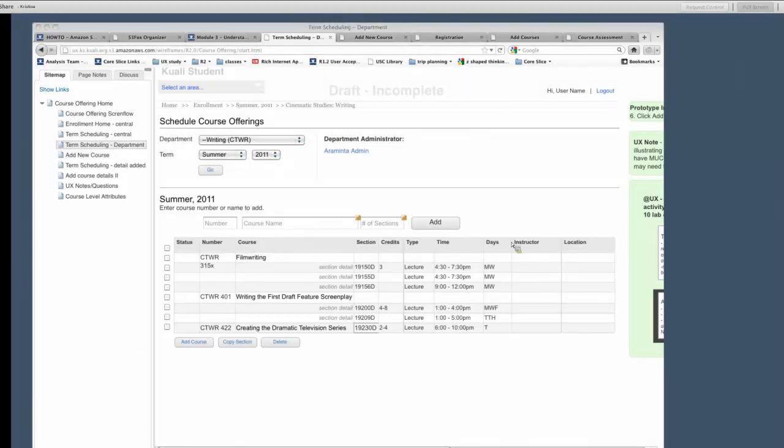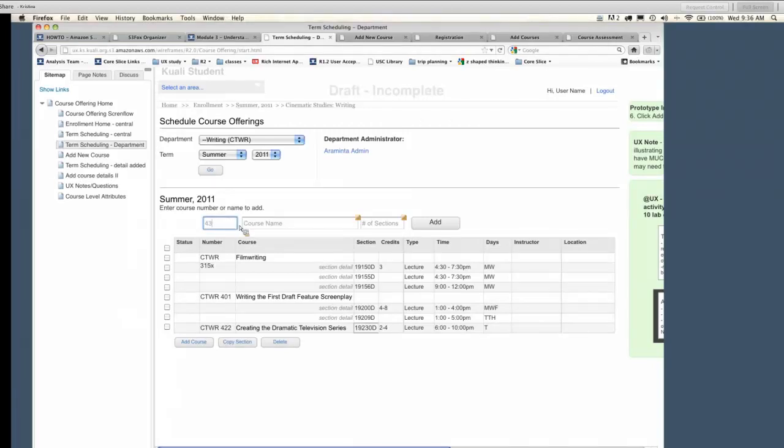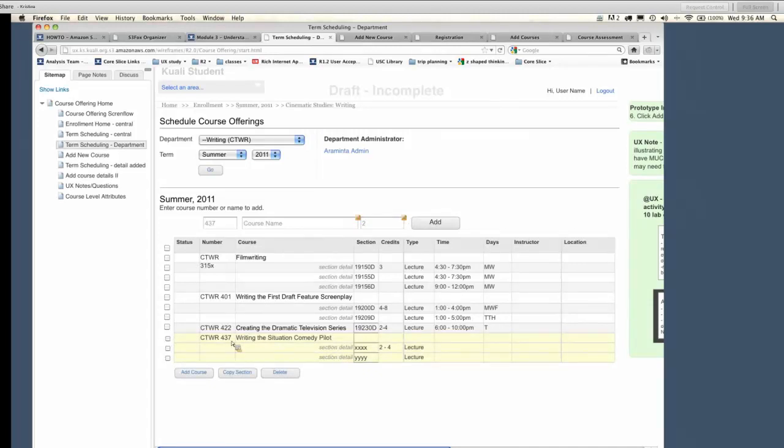This is the same screen you saw before, but this is looking at just the department and the ability to add a section that was not in the previous terms. It wasn't part of the rollover, but that's okay. If they want to add in some courses from their catalogs, they can add additional sections that wouldn't have been part of the last rollover. So they can add this 437 writing the situation comedy plot, and because it wasn't part of rollover, it's not going to have any time information or days information. It's just taking information directly from the canonical unit.